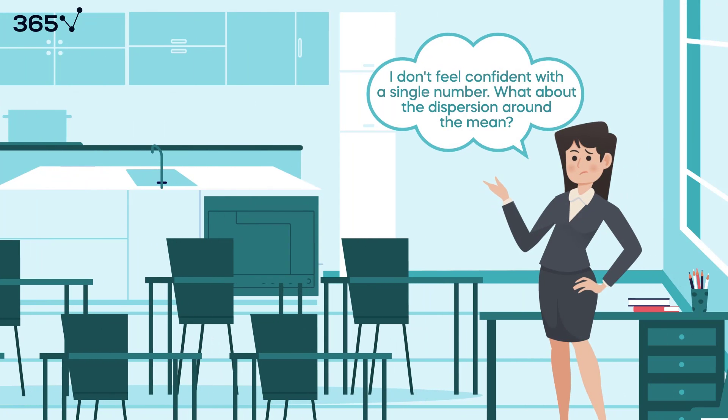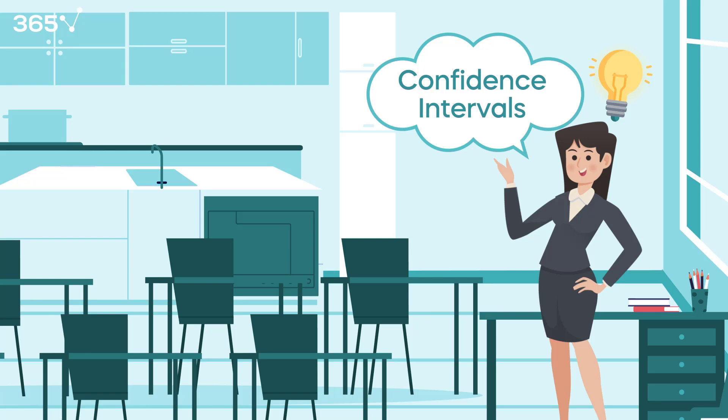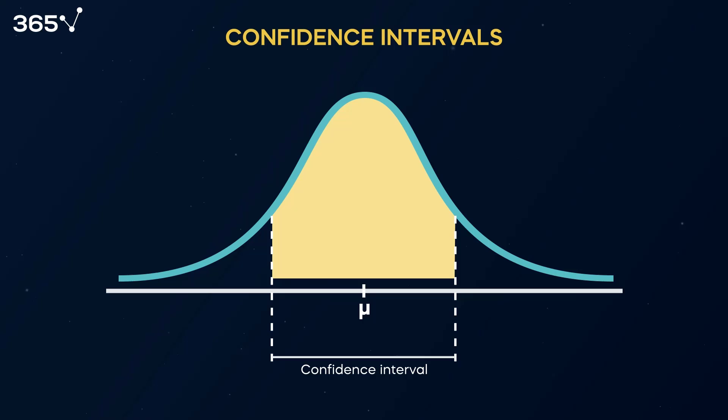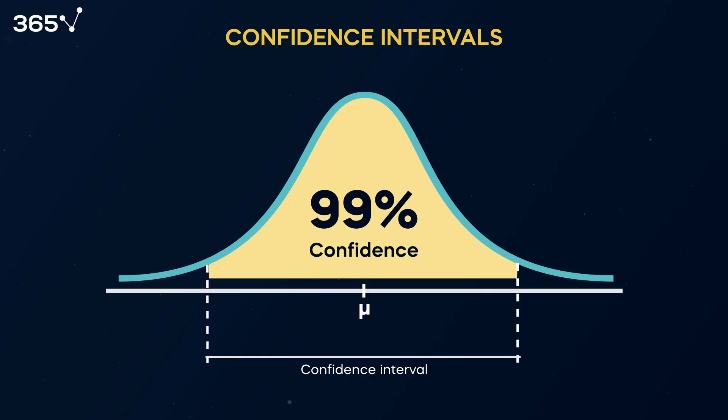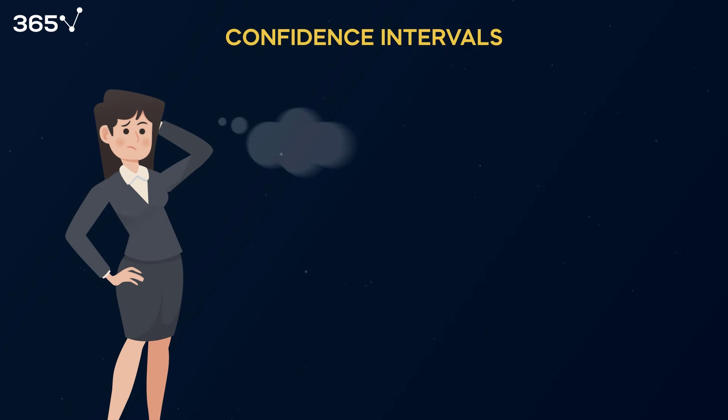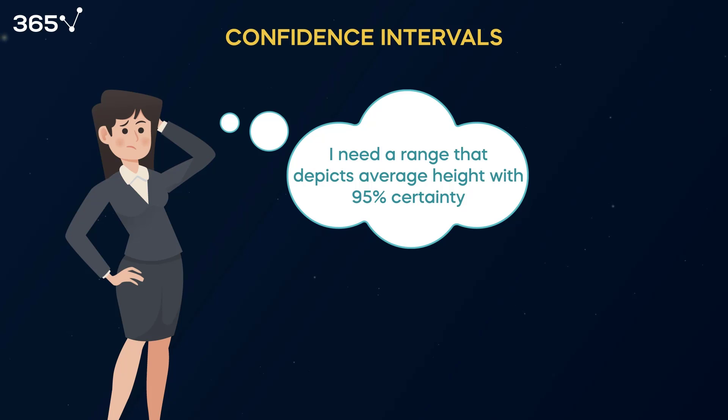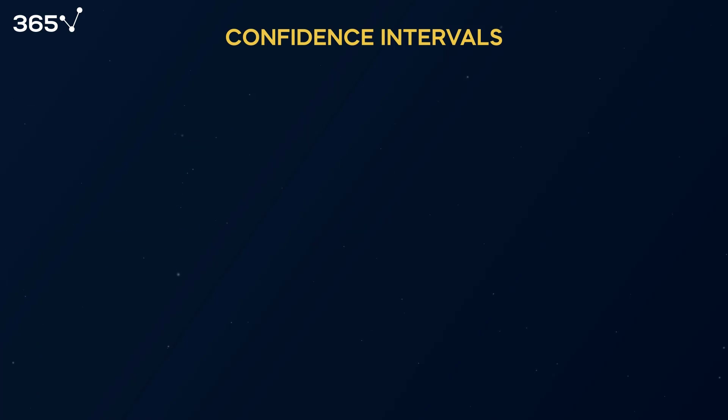But often, decision makers feel uncomfortable working with a single number, which doesn't give them information about dispersion. This is where confidence intervals enter the stage. A confidence interval provides a range of possible realizations of the true population value, an interval with which we are confident the population parameter will fall in 90, 95, or 99% of the cases. In our case, the teacher wants to obtain a range that depicts the average height in 95% of the subjects, rather than relying solely on the mean sample height received.